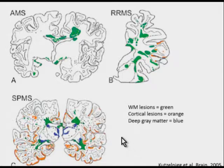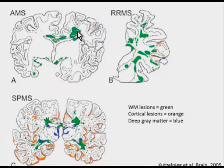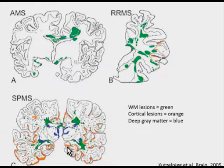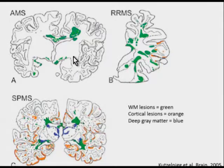When autopsy cases were mapped for involvement, white matter lesions in green were mapped for the acute Marburg or relapsing-remitting variant and for the secondary-progressive variant; cortical lesions were mapped in orange. Only a few cortical lesions were found in the acute/relapsing-remitting forms, but quite a few in the secondary-progressive along with deep gray matter involvement. The burden of plaque involvement, while some plaques are smaller, shows quite extensive brain involvement overall.